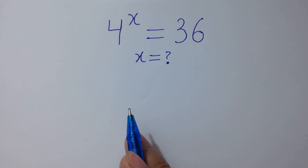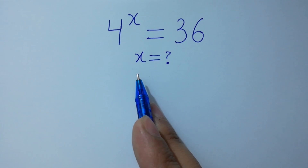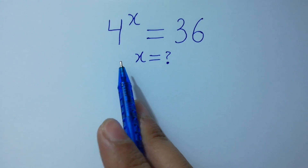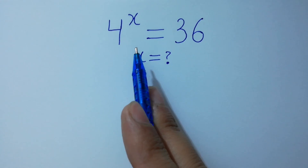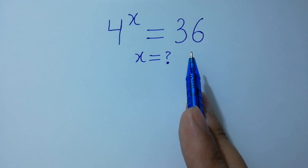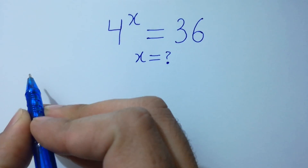Hello friends, find the value of x if 4 to the power x equals 36. Let's have a solution.